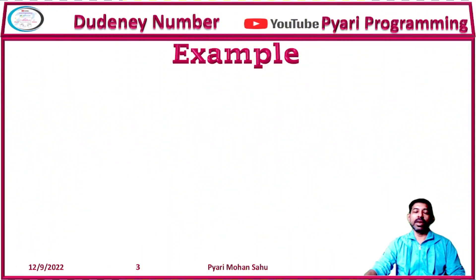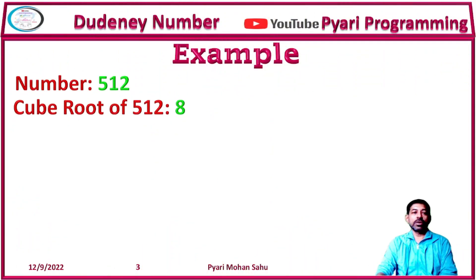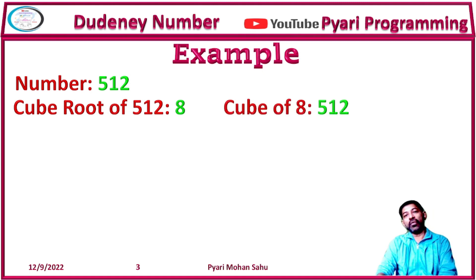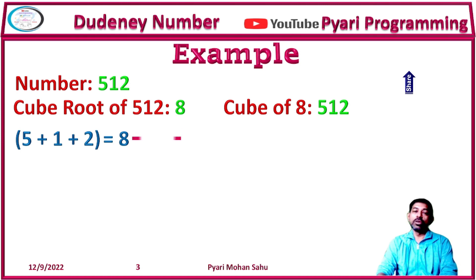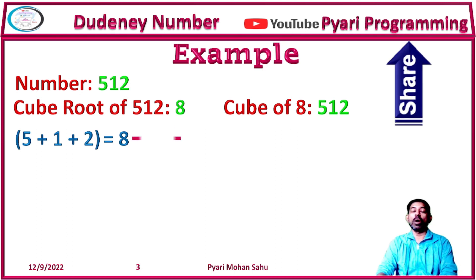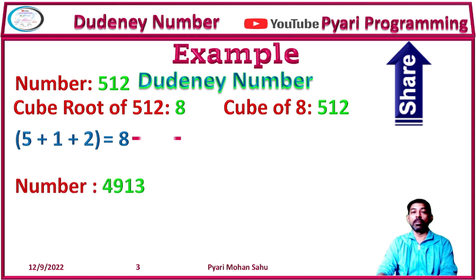Let's see an example. Suppose my number is 512. First I find the cube root of 512, which is 8. Now I find the cube of 8, which is 512 — so it is a perfect cube. Now I find the sum of digits: 5 + 1 + 2 = 8, which is equivalent to the cube root of the number. That's why 512 is a Dudani number.